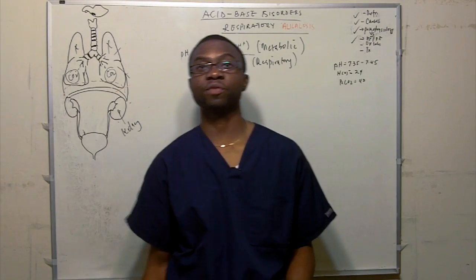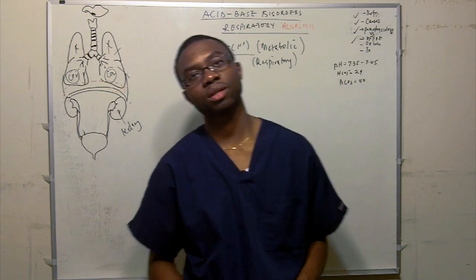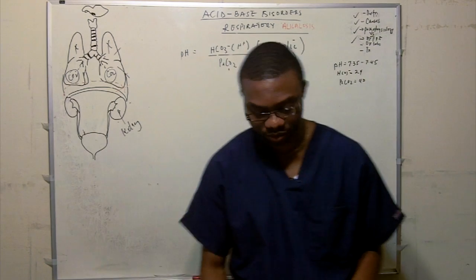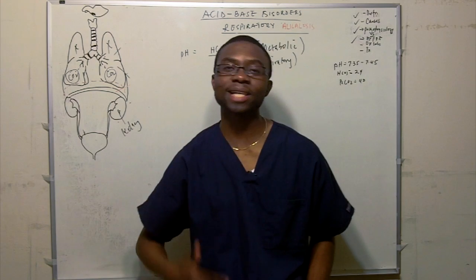The next topic we're going to be talking about to finish our series of acid-base disorders is respiratory alkalosis. How do we define it? Well, it's respiratory alkalosis. This is an increase in blood pH.